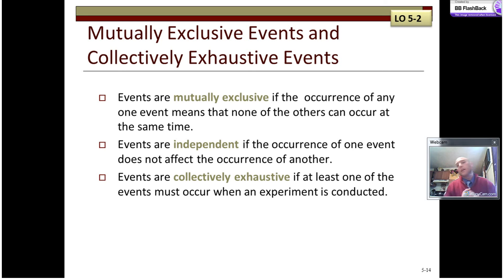Mutually exclusive, collectively exhaustive, and independent. Those are the three things that we need to keep in mind about different probabilities in order to use the rules that we see in the second half.